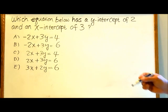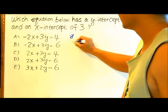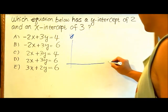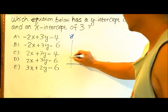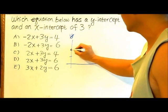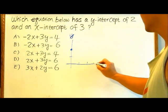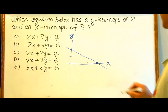Let's draw an x-y graph to understand this problem. A y-intercept of 2 means the point (0, 2), and an x-intercept of 3 means the point (3, 0). So that's the line right there.